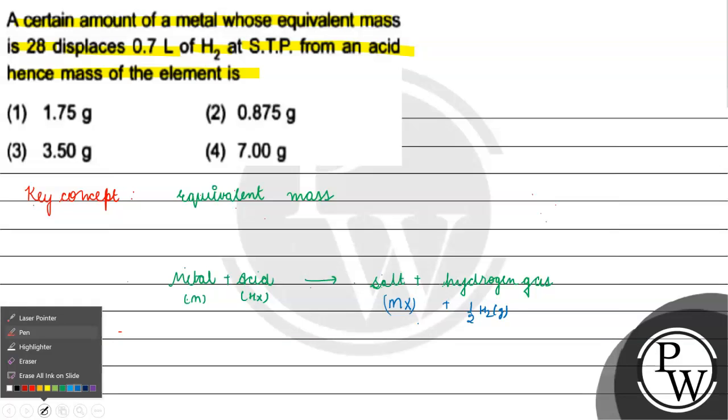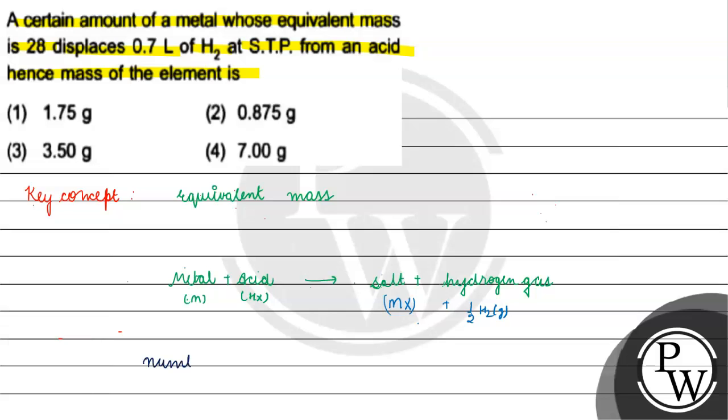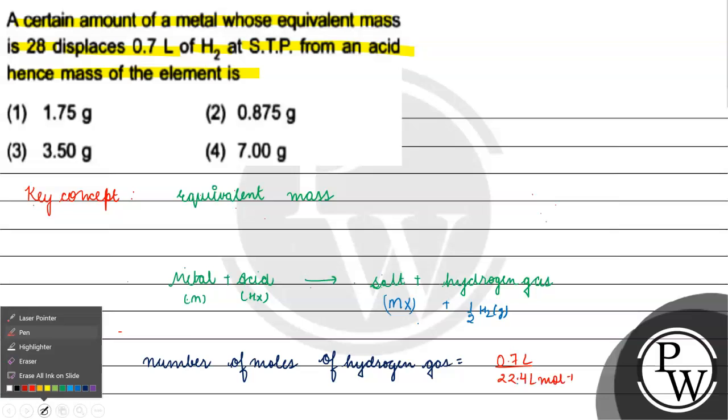If we want to find number of moles of hydrogen gas, we use the molar volume. How much is the molar volume? It's basically 22.4 liter per mole.